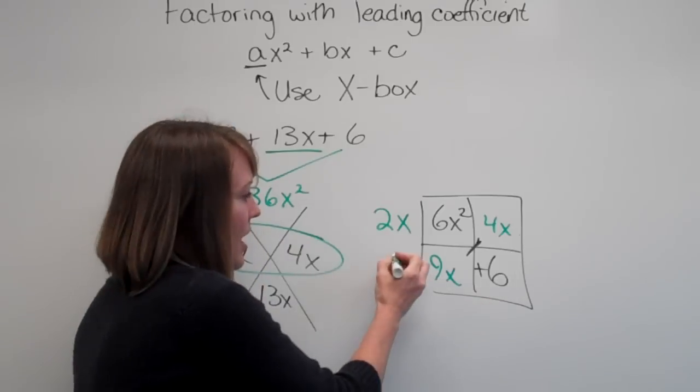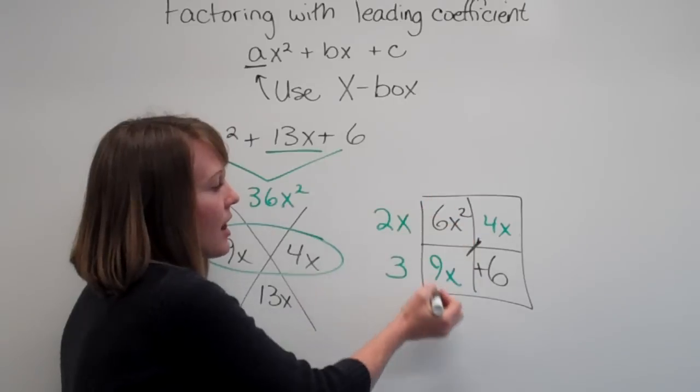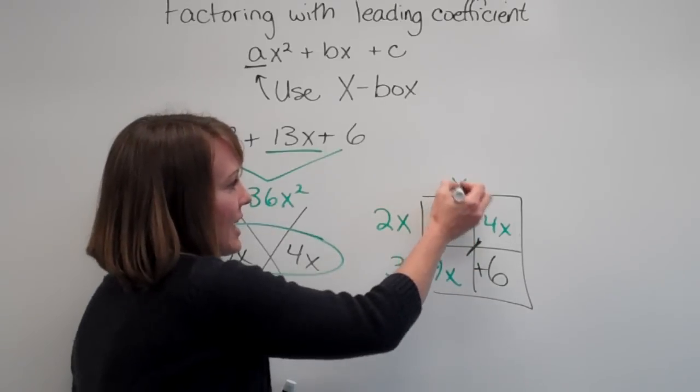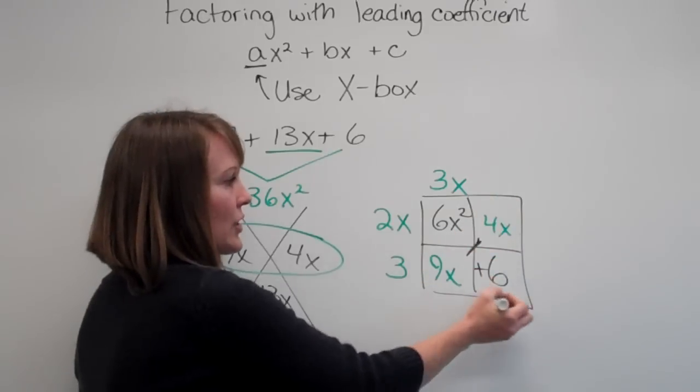Greatest common factor of this row. What do they have in common? A 3. Greatest common factor of this column. Well, they both have an x and they both divide by 3. And the greatest common factor here would be 2.